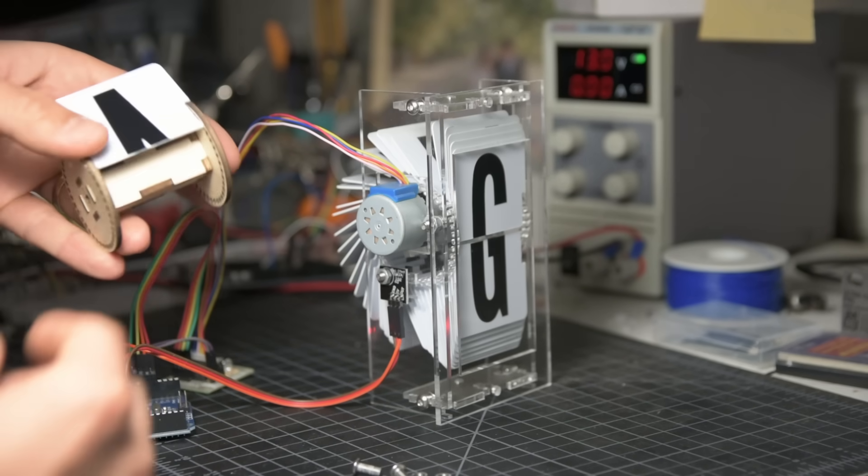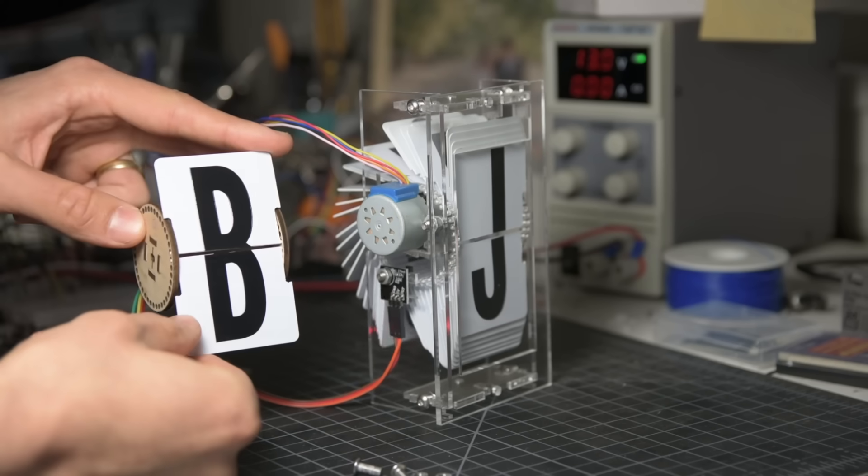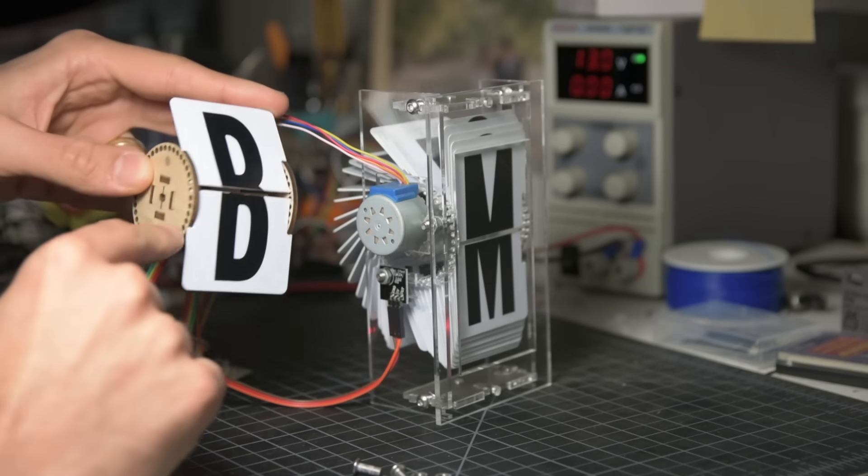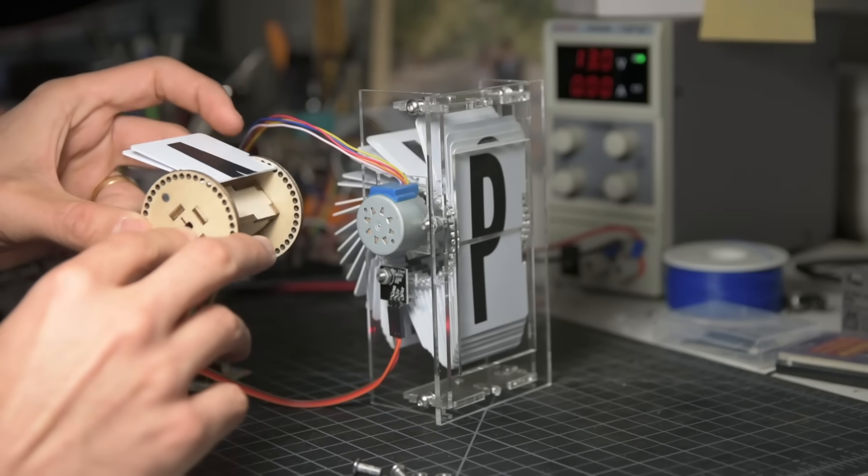The spool looks something like this. The flaps each have half of a character printed on them, and they also have pins that stick out and fit into holes along the outside of the spool. As the spool rotates,